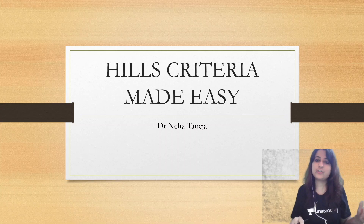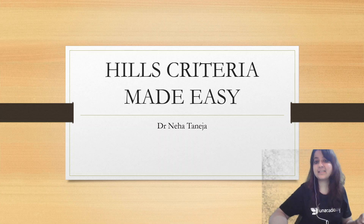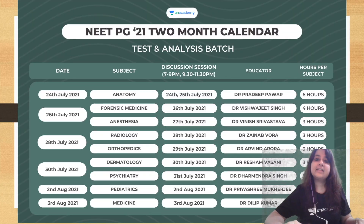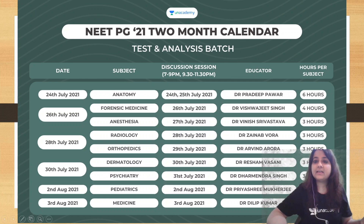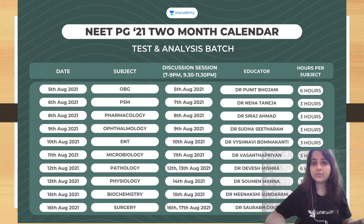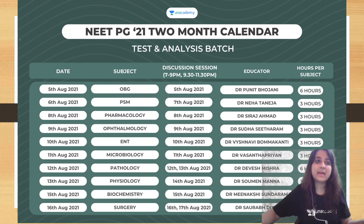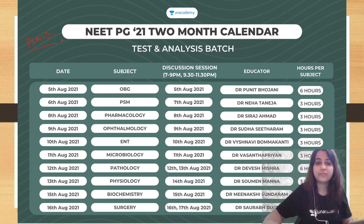Hi everyone, welcome back to another short episode of PSM. Today I am going to teach you how you can remember Hill's criteria easily. Before that, this is a 2-month calendar for NEAT PG 2021 on Unacademy. We are having a test and analysis batch which has just started from 24th of July. We are going to cover all 19 subjects, with a test and discussion for all of them. You can subscribe and use my code PSM10 or PSMLIVE to get a 10% off on your subscription.